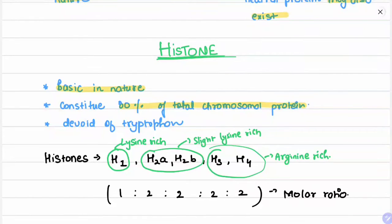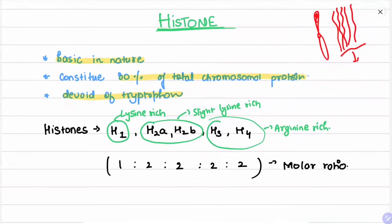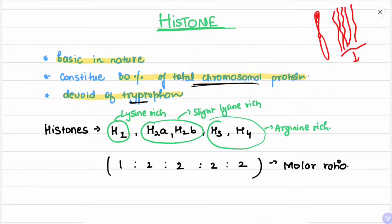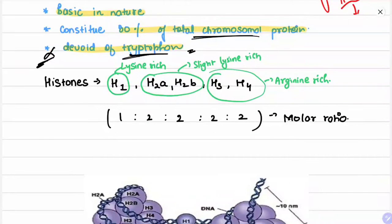Histone is basic in nature and constitutes about 80 percent of total chromosomal protein. It is devoid of tryptophan. Chromatin is the structural unit of a chromosome — a chromosome is made up of various chromatin threads or fibers, and these chromatin fibers condense to form a chromosome.